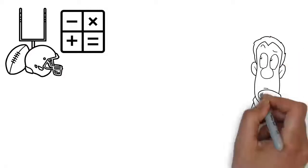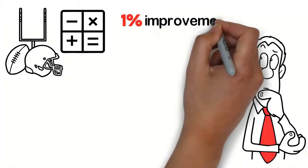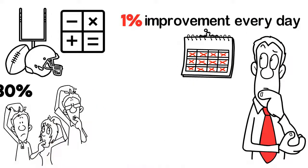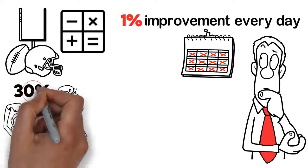Take a new skill like sports or math. Suppose you make 1% improvements every day. After 30 days, most people think you'd be 30% better, but that is not the answer.